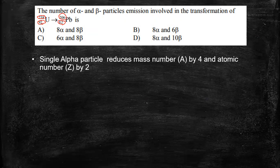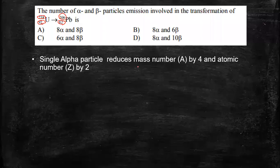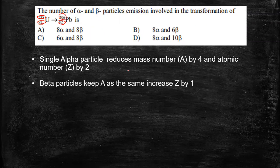The first point is that a single alpha particle reduces the mass number which is represented by the letter A by 4, and the atomic number can be reduced by 2. So the atomic number notation is Z.